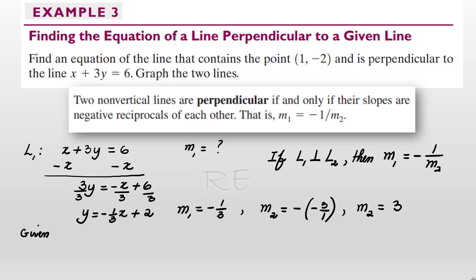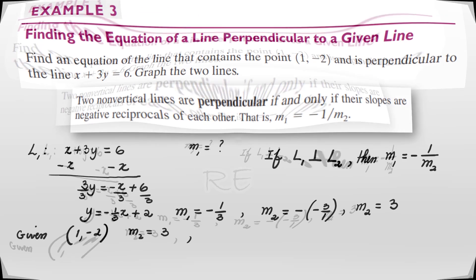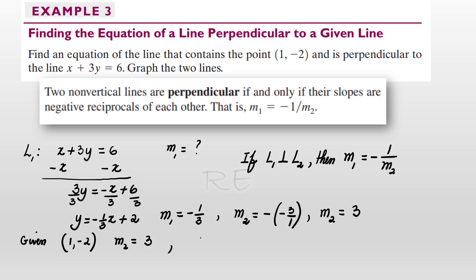What we are given is a point (1, -2) and a slope of 3. We're going to use the point-slope form to find an equation of that line. Y minus negative 2 is equal to 3 times X minus 1.